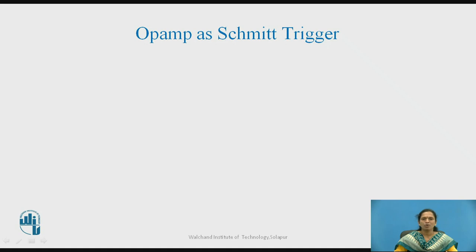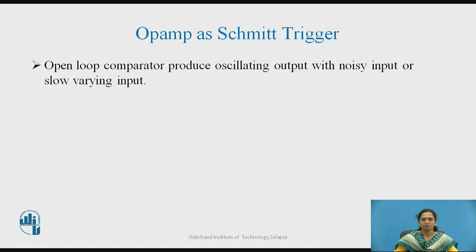Before moving towards OPAMP as Schmitt Trigger, recall the concept of open-loop comparators where the output voltage will contain errors — a noisy output signal due to false transitions at the output. It will produce an oscillating output with noisy inputs or a slow varying input.